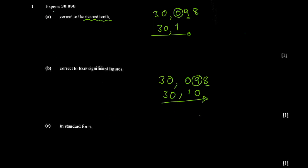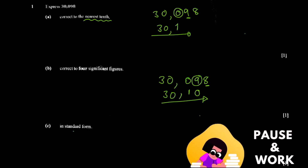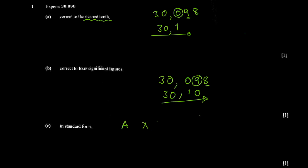Part C asks us to express the same number in standard form. Standard form is written as a × 10 to the power n. It's important to know the valid values for a: a must be greater than or equal to one, and strictly less than ten — so ten itself is not included, but one is.